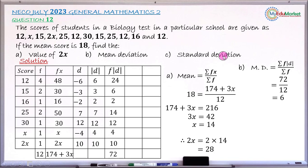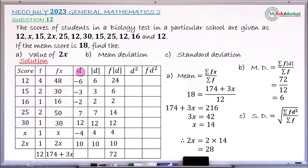Now for part C — the standard deviation. The formula is: Standard Deviation = √(ΣFD² / ΣF). We need a column for D² and another for FD². Squaring each deviation: (−6)² = 36, (−3)² = 9, (−2)² = 4, 7² = 49, 12² = 144, (−4)² = 16, and 10² = 100.